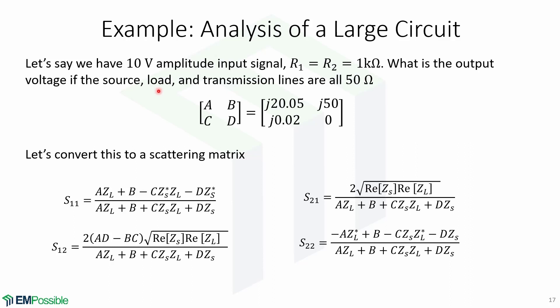What will be the output voltage if the source, load, and transmission lines are all 50 ohms? This is the ABCD matrix that we derived for the previous circuit. We can convert these parameters into scattering parameters by these formulas.